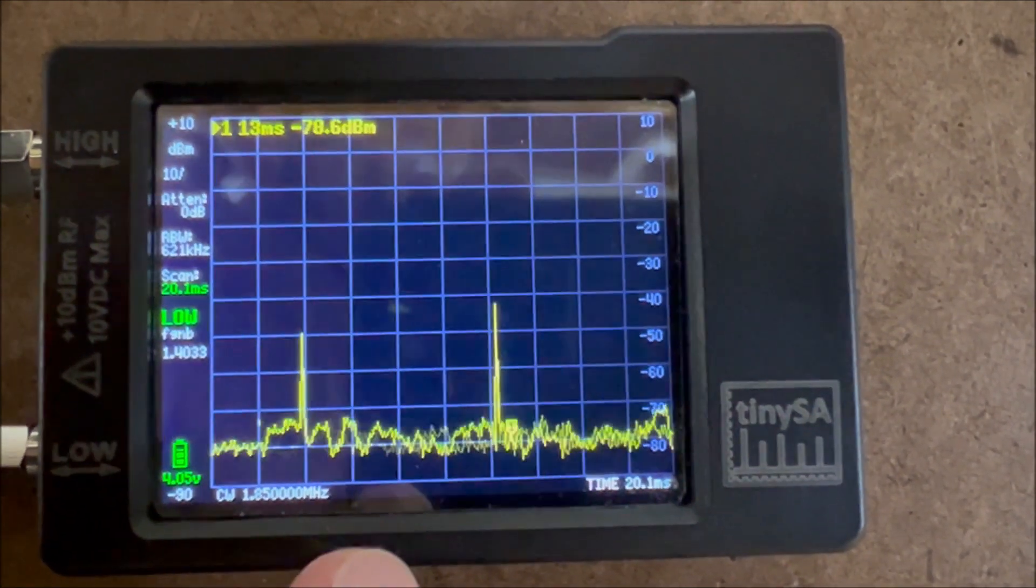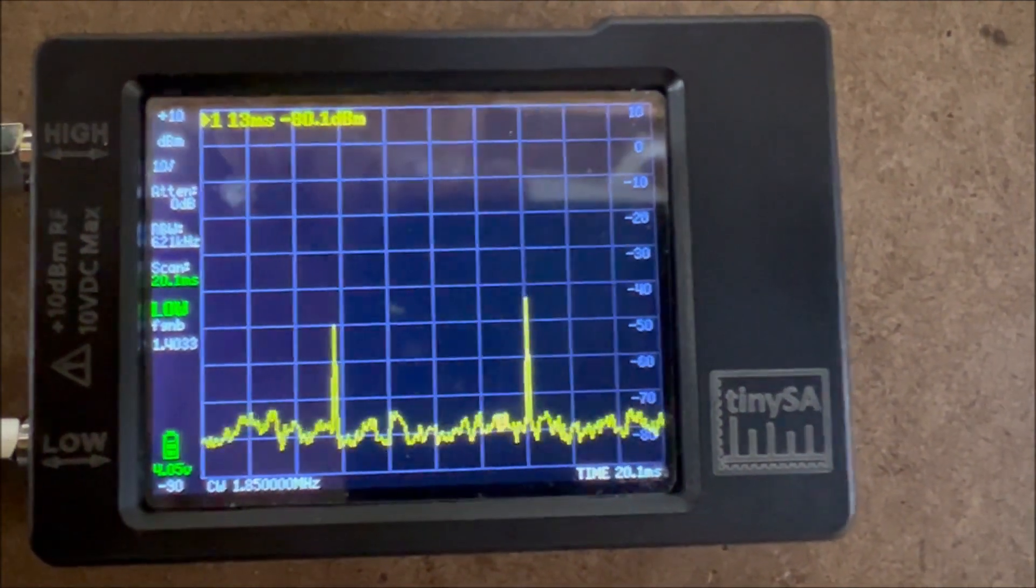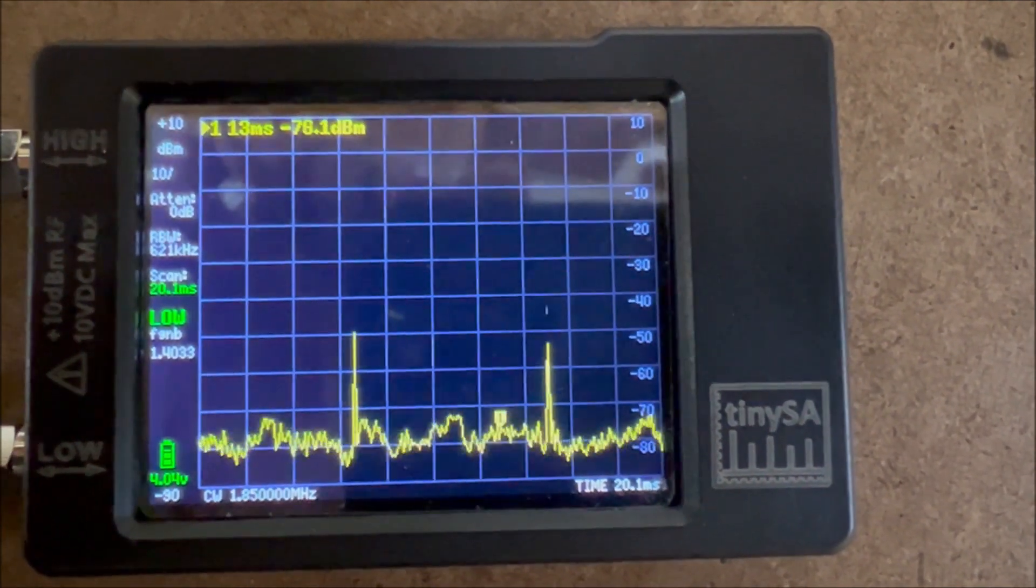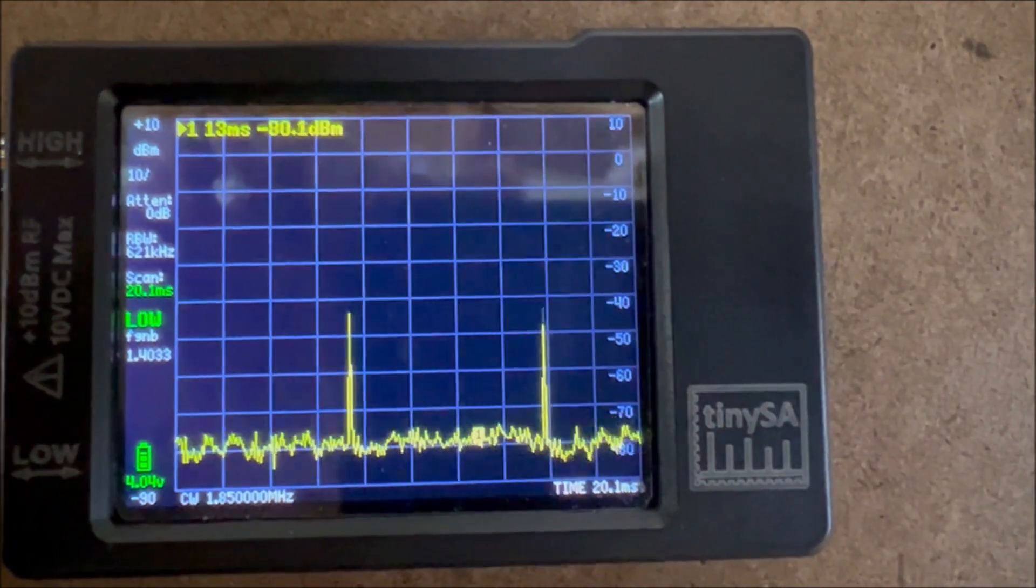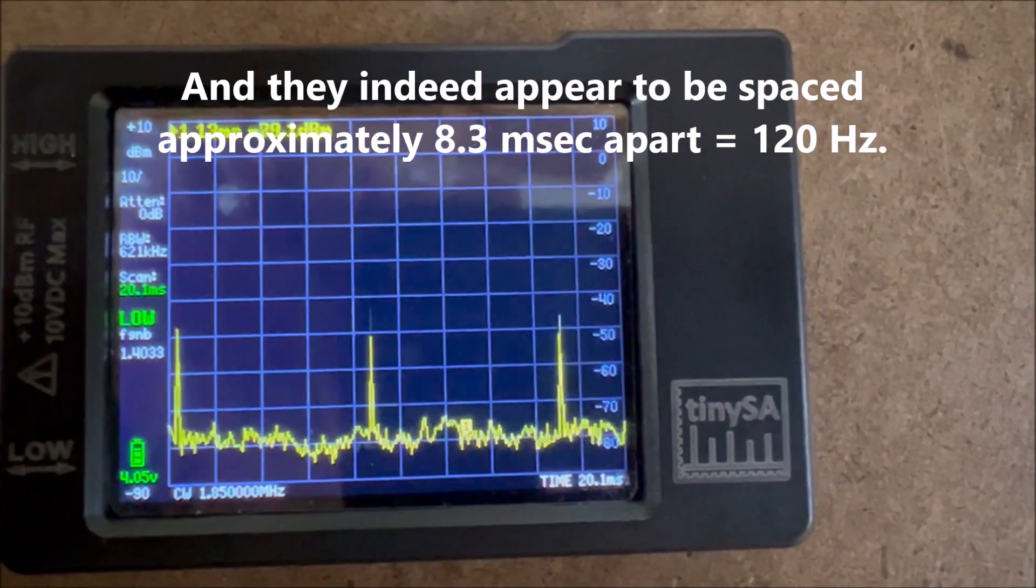In the zero span mode, we're actually looking at demodulated audio, and those spikes should be spaced at a time equivalent to 120 Hz, or 8.3 ms. And that's the beauty of the interval timing.